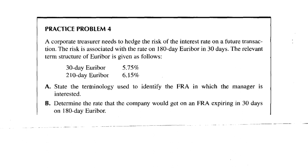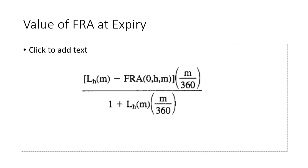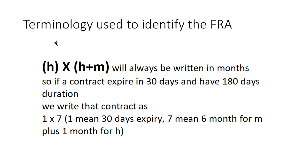Part A asks to state the FRA terminology. As discussed, it is written as H into H plus M. H is 30 days and H plus M is 210 days (180 plus 30). Converting to months: H is 1 month and H plus M is 7 months. So we are interested in a 1×7 FRA. This states when the FRA expires and what the total duration of the contract is.